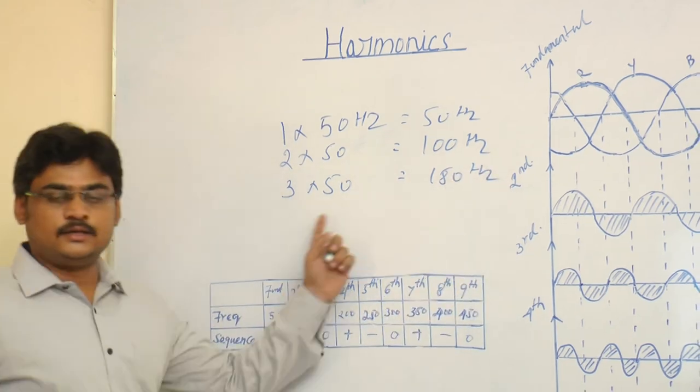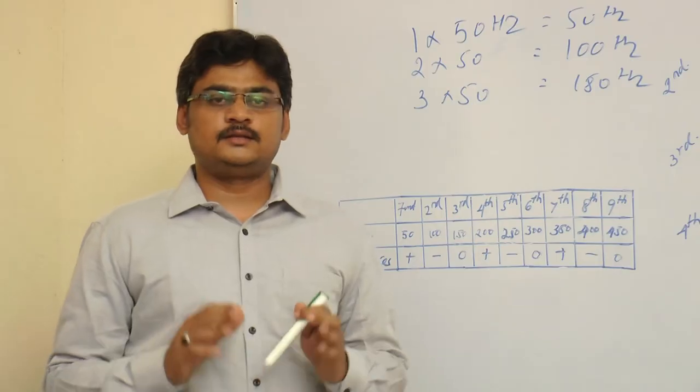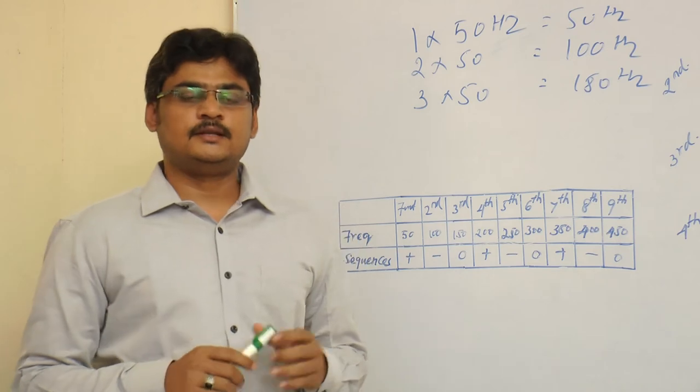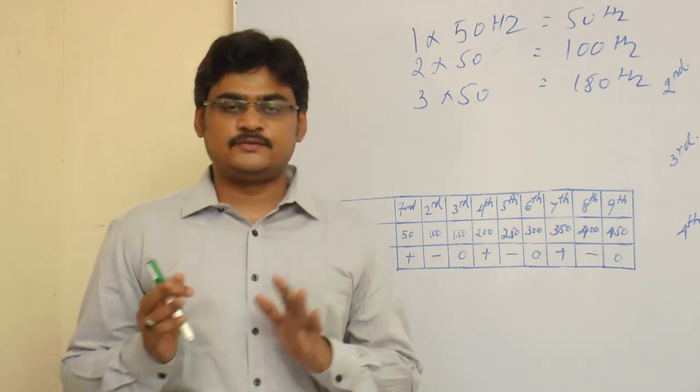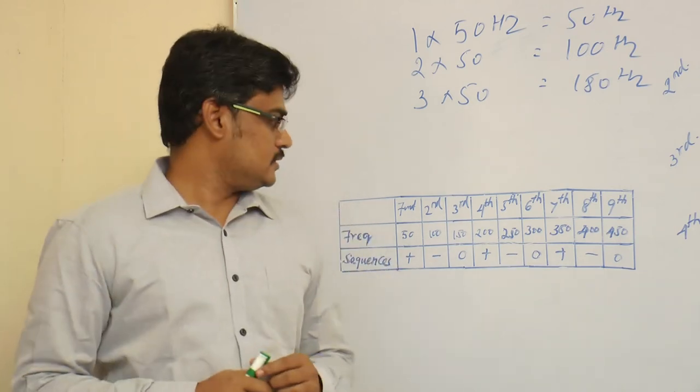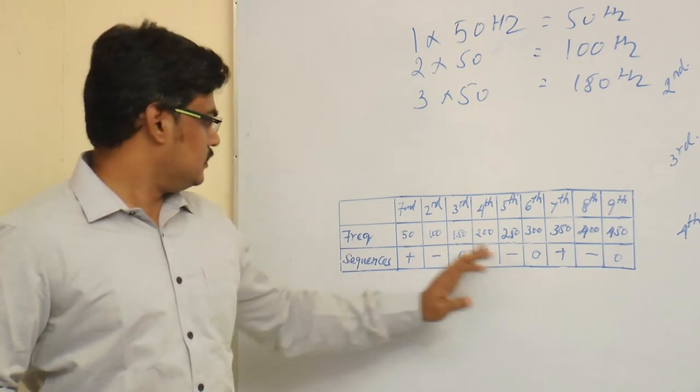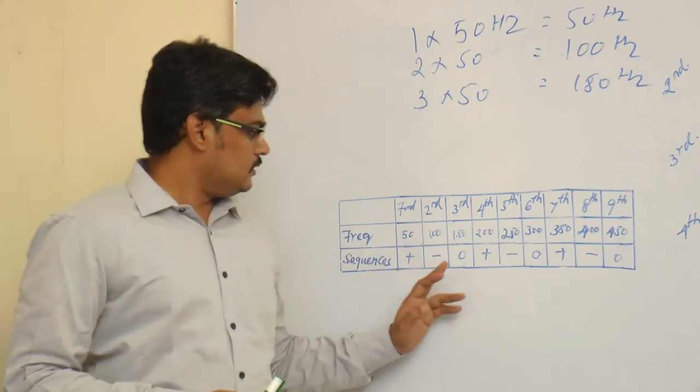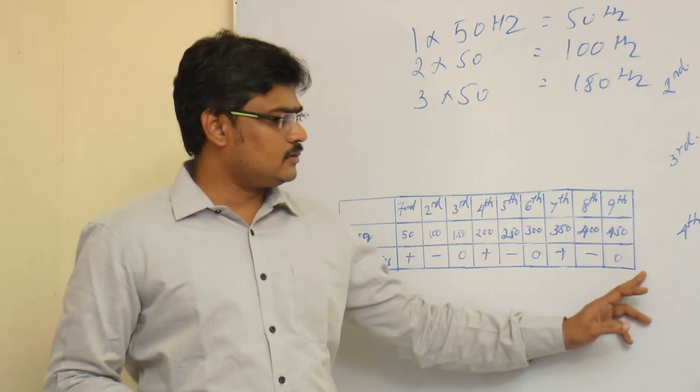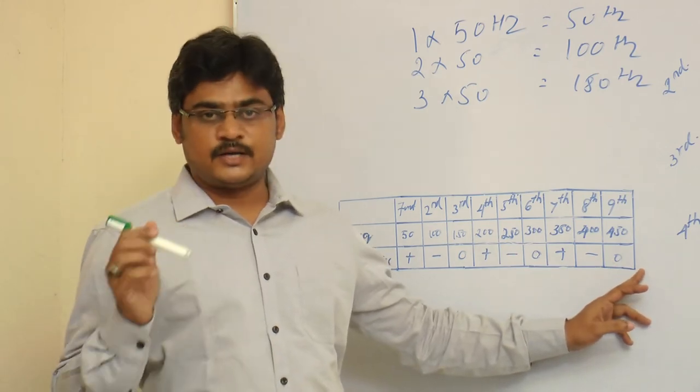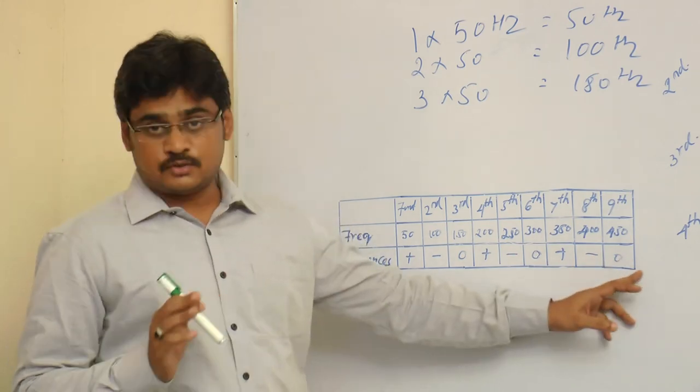There are three sequences of harmonics: positive sequence, negative sequence, and zero sequence. Look at the table. The 1st, 7th, 10th order harmonics are positive sequence harmonics.